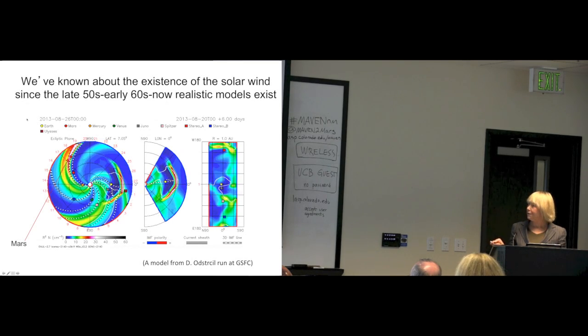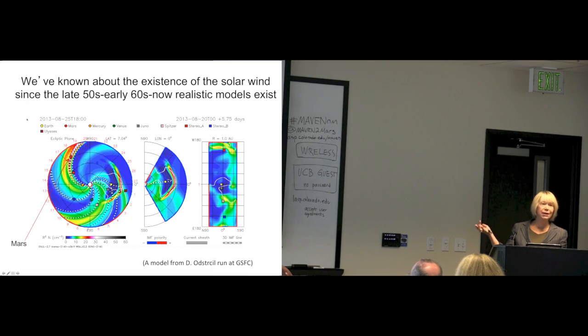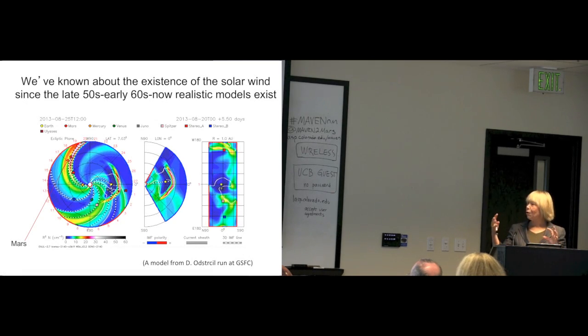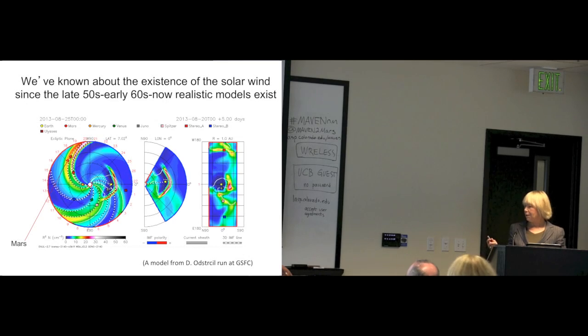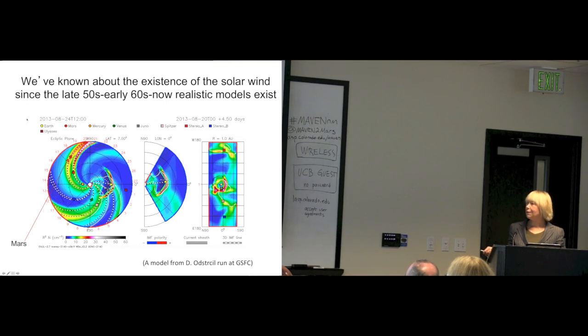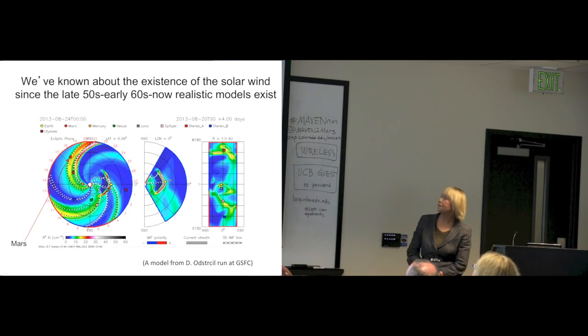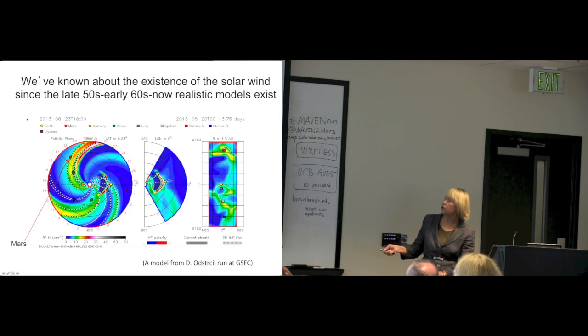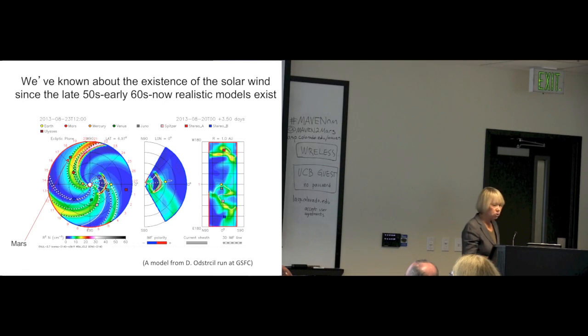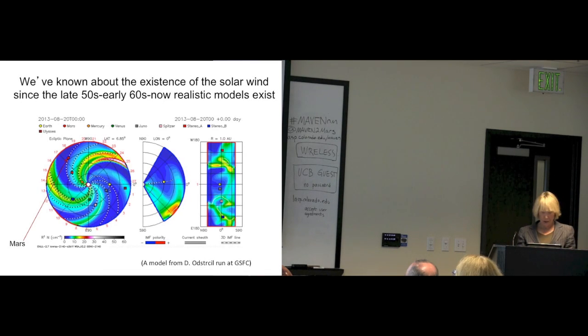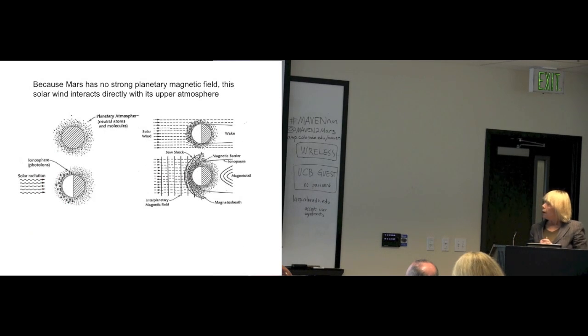This quiet condition is not even quiet in the sense that the solar wind structure varies. There are different speed streams coming off of the sun from different source regions. They're not all the same speed. Since the sun is rotating, you get a situation where you can have a following high speed stream that collides with a lower speed stream in front of it and causes a compression. So even the quiet solar wind is full of these compression regions.